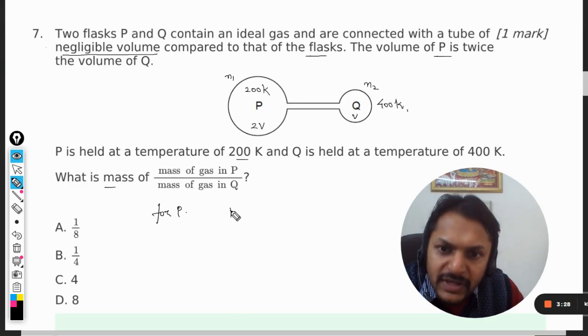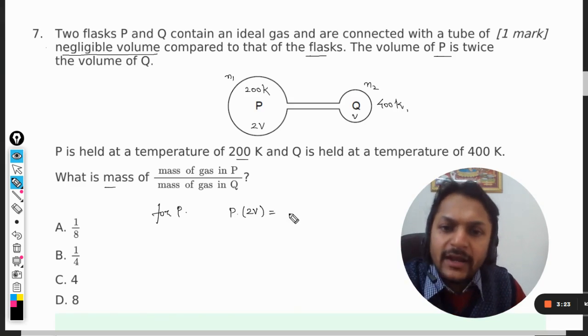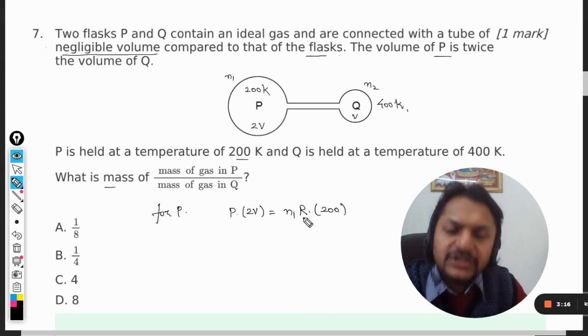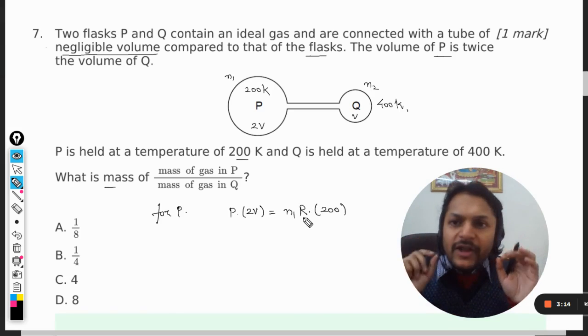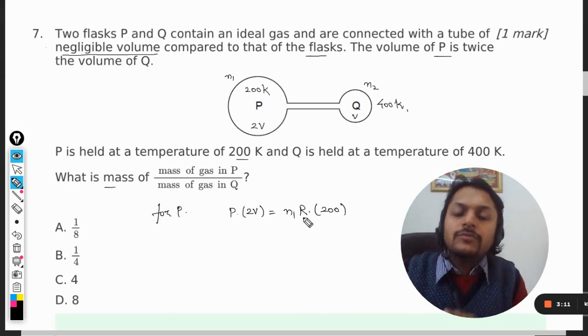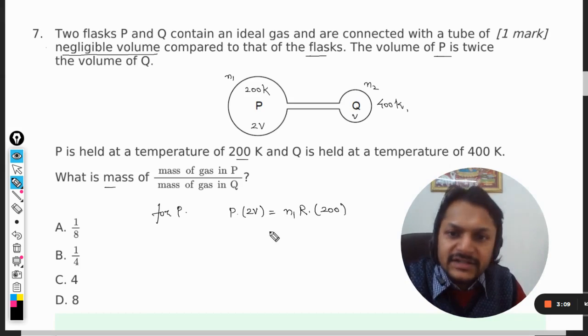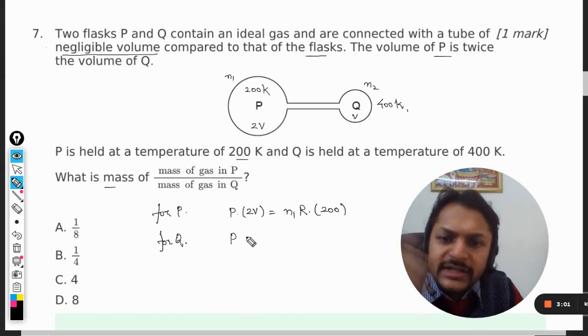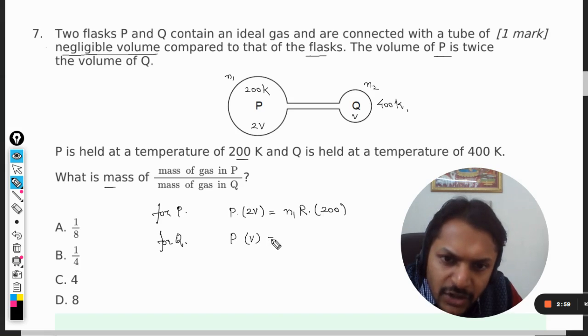For the container P, P is the pressure and 2V is the volume. PV equals nRT, so I'm taking n1 as moles here, R is the universal gas constant, and temperature is 200 Kelvin. Whenever they say ideal gas, the first thing that should come to your mind is the ideal gas equation. Now for Q, the pressure will be taken as the same because only then it will become stable. Volume is V, number of moles is n2, R, and the temperature is now 400.